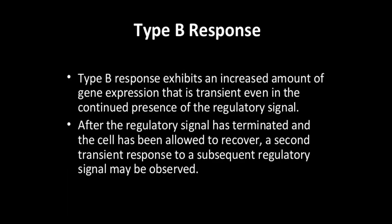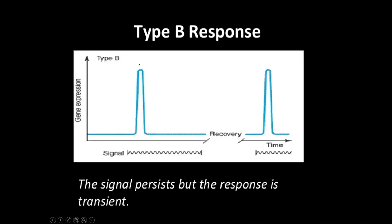There is another response — a type B response. This exhibits an increased amount of gene expression that is transient even in the continued presence of the regulatory signal. After the regulatory signal has terminated and the cell has been allowed to recover, a second transient response to a subsequent regulatory signal may be observed. So whenever any inducer is there, the response will be transient — only for a short while. After that it will not be there. The cell is again allowed to recover, and then again a second transient response will be observed.